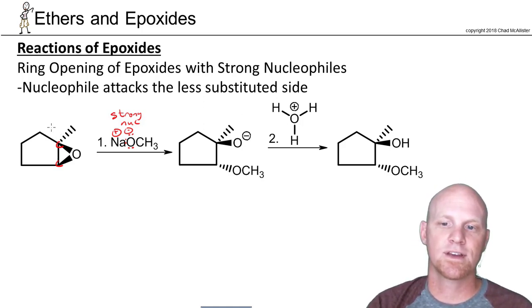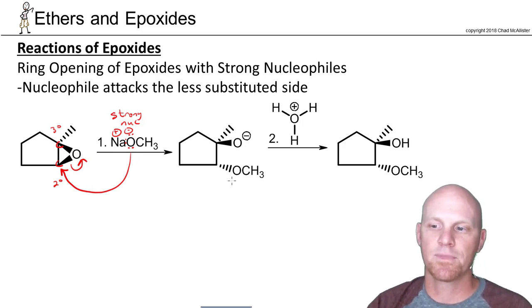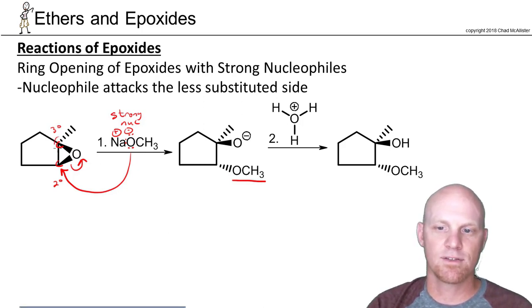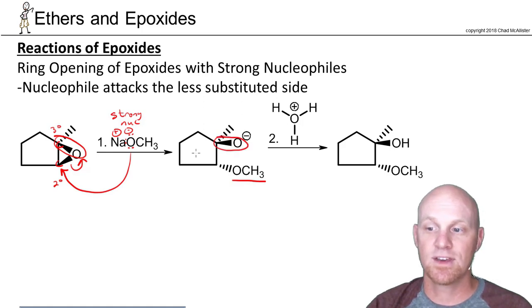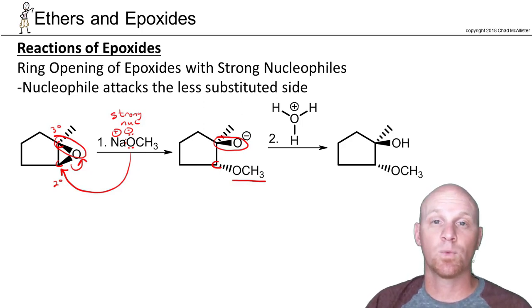If we notice, this one right here is a tertiary carbon, this one down here is secondary, so backside attack is going to occur down here. With the oxygen on the wedge position, backside attack means this OCH3 is going to attach here at the dashed position. We haven't done anything to break this bond right here though, so that's still a wedge. The key is the carbon we attack is going to experience inversion, but the carbon of the epoxide we didn't attack is not going to experience inversion.